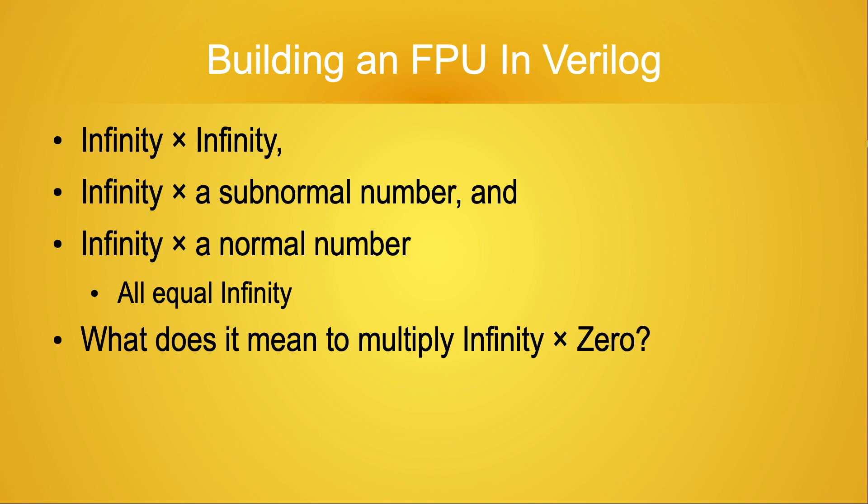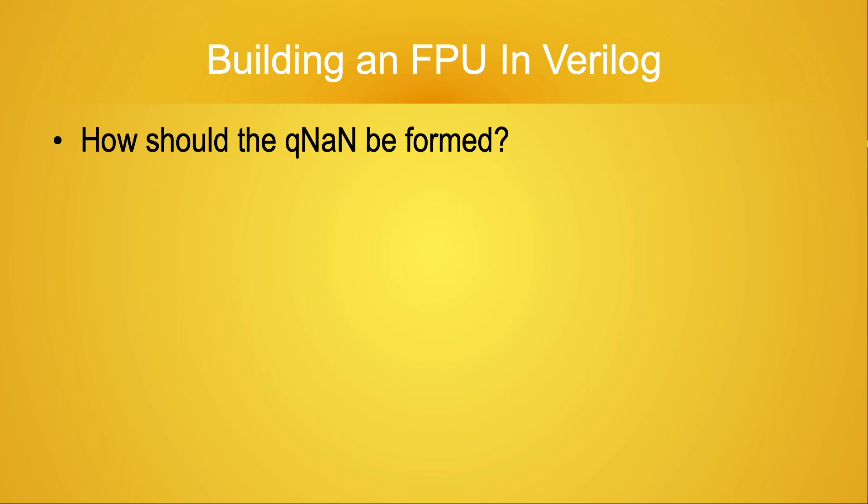The odd case here is what does it mean to multiply infinity by zero? If you want to know the full answer to that, you need to take a course in calculus. Seriously. A brief summary is that infinity times zero can be infinity, zero, a finite number, or completely undefined. It's for cases like this that the IEEE 754 standard defines the NaN values.